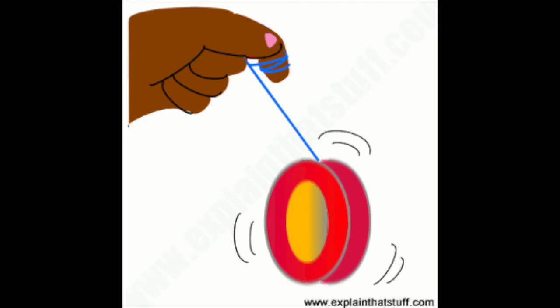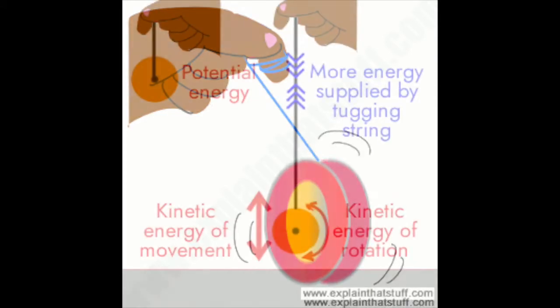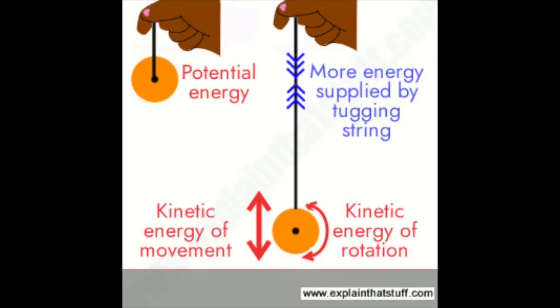A yo-yo demonstrates two types of energy, potential and kinetic. Potential energy is stored energy and kinetic energy is the energy of moving objects.